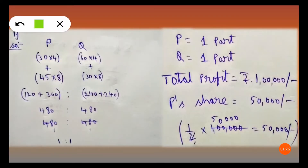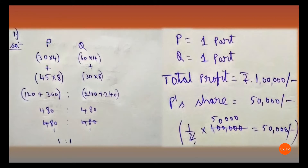As per the question, P has invested 30,000 rupees for 4 months, so 30 into 4. To keep it simple, I removed the additional zeros. So 30 into 4, plus 45 into 8 — after 4 months he added 15,000 rupees, so 30 plus 15 gives 45,000, and that 45,000 was invested for 8 months. Q invested 60,000 rupees; after 4 months he withdrew 30,000, leaving him with 30,000 for 8 months.